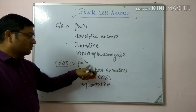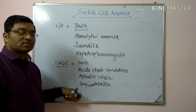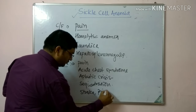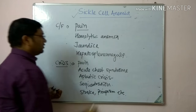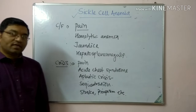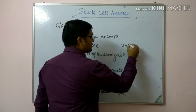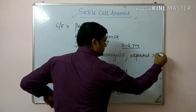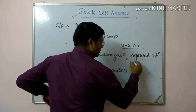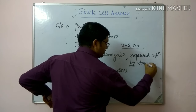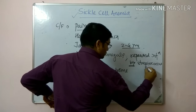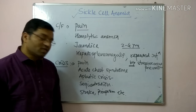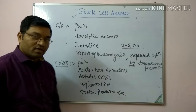The main crises are pain crisis, acute chest syndrome, aplastic crisis, and sequestration crisis. Complications can also include stroke and priapism. Due to damage to the spleen by infarction, occurring around age two to four years, there are repeated infections by encapsulated organisms, particularly Streptococcus pneumoniae. Vaccination against capsulated organisms is recommended for sickle cell anemia patients.